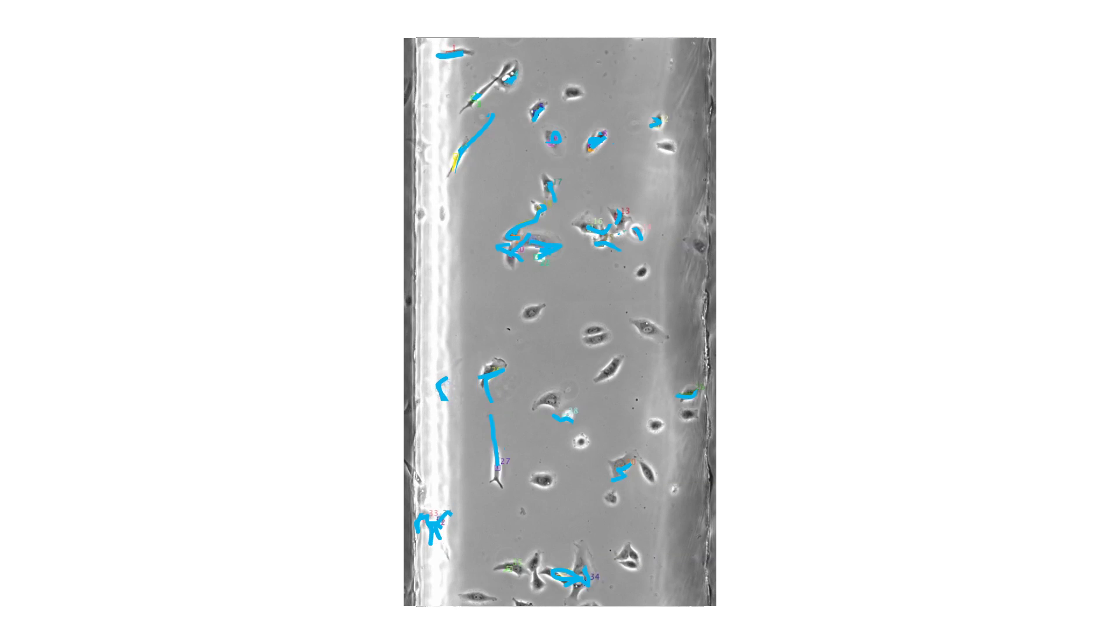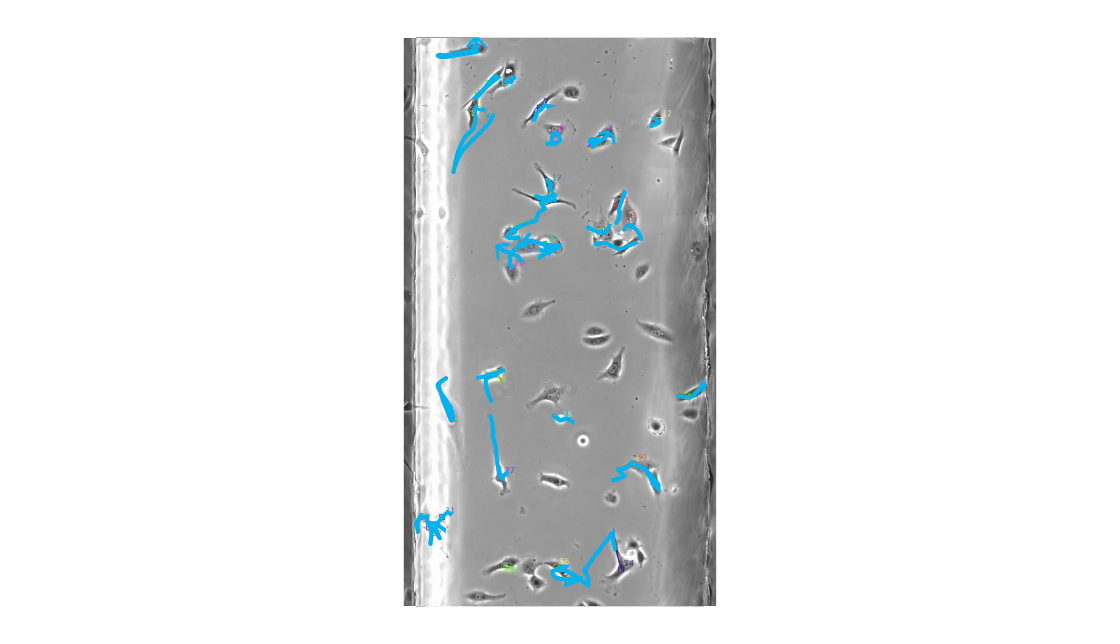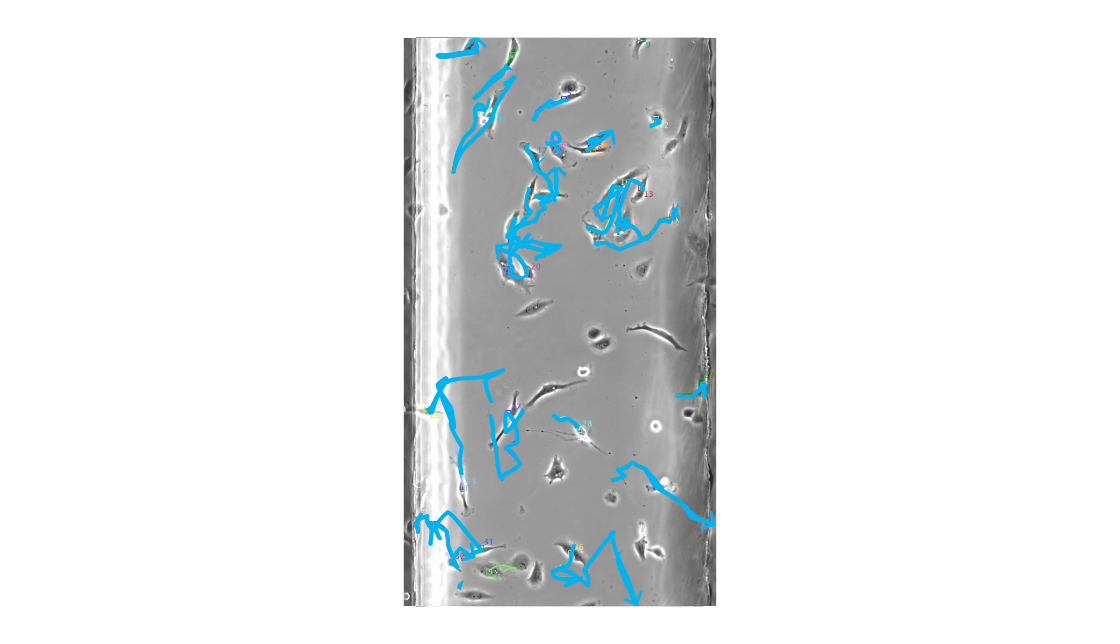But in this video, where the researchers have blocked the cell's ability to see the signal, the cells lose their sense of direction, moving around randomly instead.